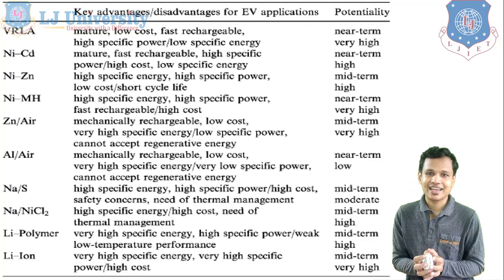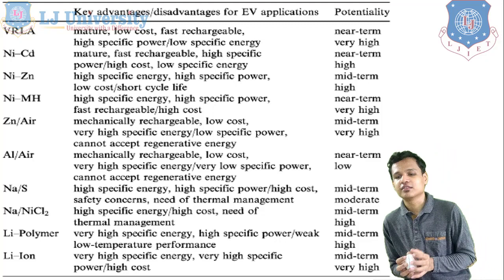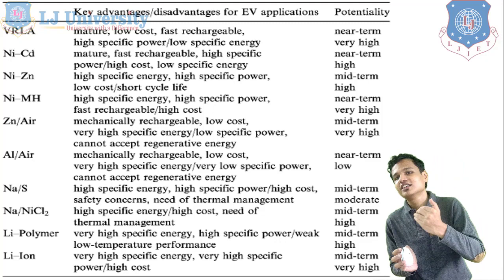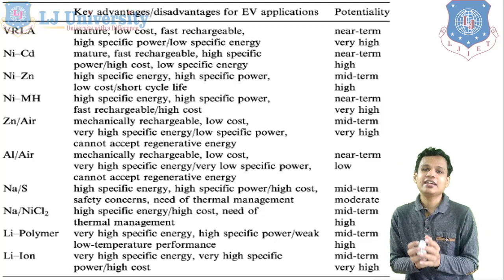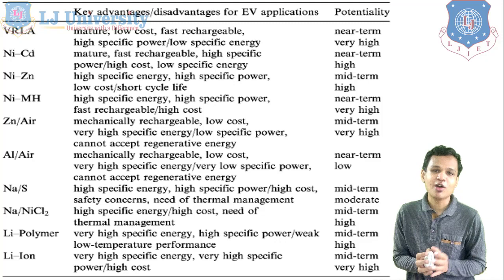The lithium polymer battery has very high specific energy and high specific power. The only disadvantage is weak low-temperature performance. In the medium term, it has high potentiality. Lithium ion, the last one, has very high specific energy and high specific power. The only downside is that the cost is comparatively higher. It has very high potentiality in the medium term. These are the basic comparisons of all the batteries for electric and hybrid vehicles.